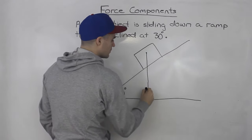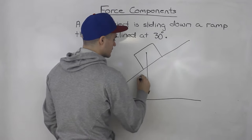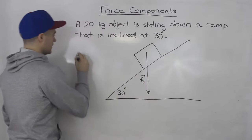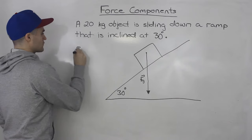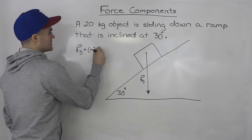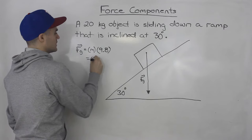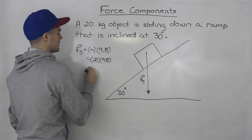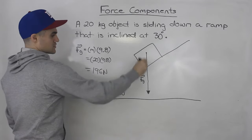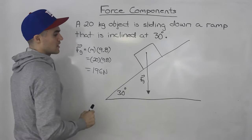The force of gravity, as you know, is always just straight vertically down. So this is the force of gravity acting on this object. Force of gravity is always equal to the mass of the object times that constant of 9.8. So a mass of 20 kilograms times 9.8 gives us 196 newtons. This force of gravity is 196 newtons acting on this object.